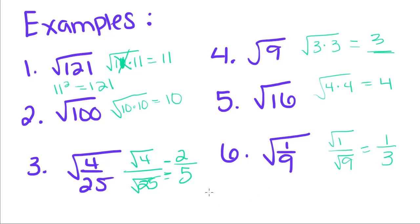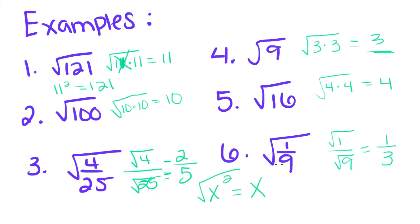So when you raise a number to the second degree, you're saying x squared. And when we want to undo that squared, we take the square root and go back to the original number. This is going to help us with triangles and solving sides of triangles in our next video, so make sure you come back and watch that.